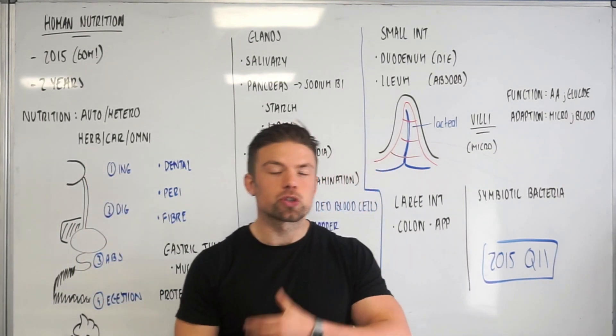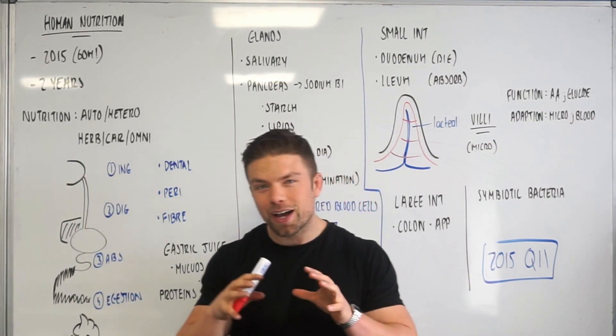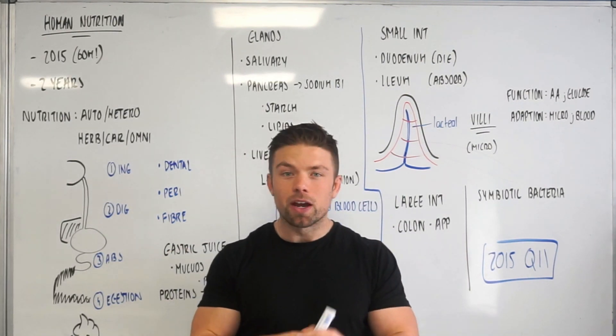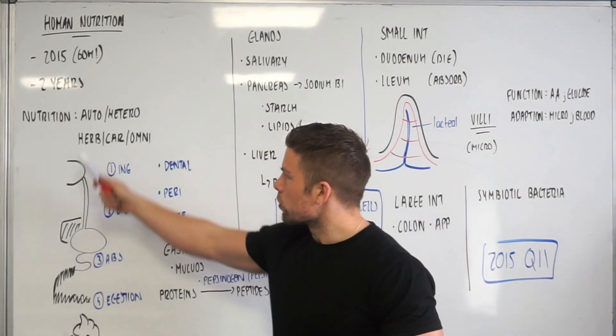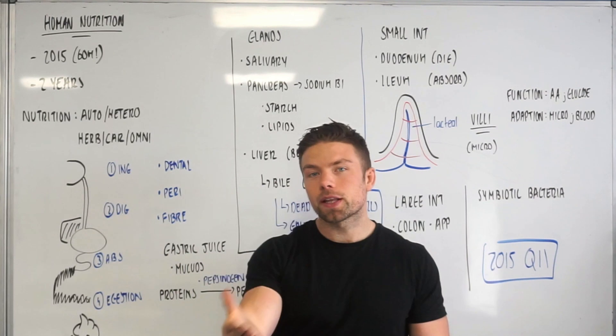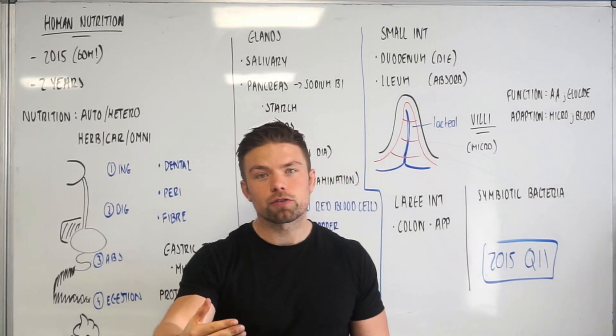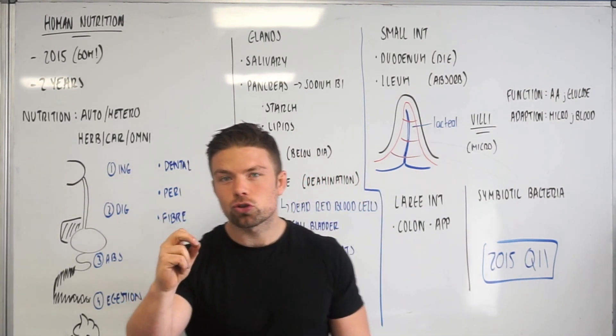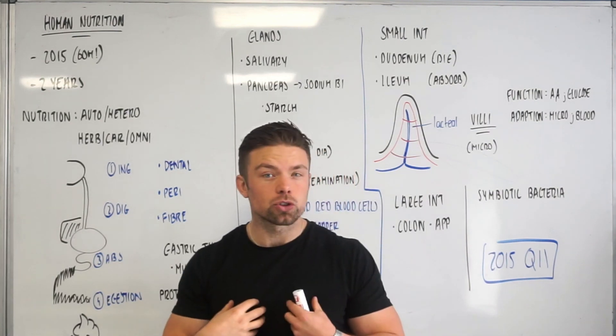First of all, we've got to talk about different types of nutrition which you may or may not know from other chapters. In fact, a lot of this you may or may not know from other chapters. So nutrition, we talk about autotrophs - something that can produce its own food like a plant during photosynthesis - or heterotrophic nutrition like us, we can't produce our own food.